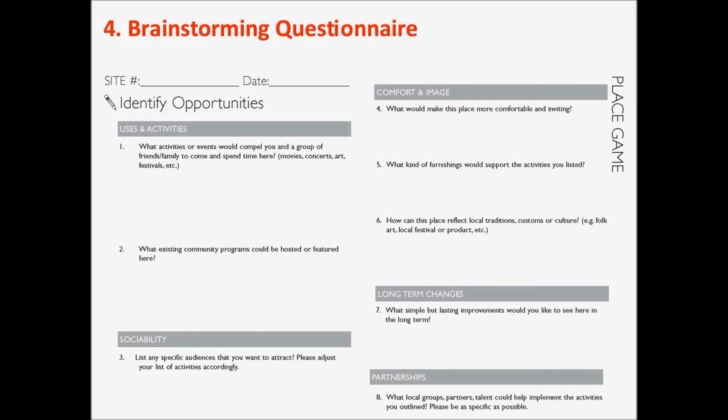The next section is comfort and image — three questions about making the space more functional and comfortable. Question four asks what would make this place more comfortable and inviting. You want people to think about seating, shade, possibly climate control, and landscaping. It's about the things that make you comfortable — whether it's chairs, benches, tables, pillows, or hammocks. People come up with a lot of interesting ideas.